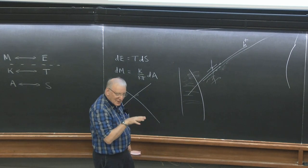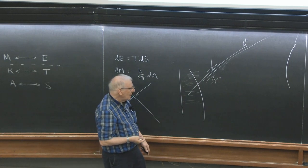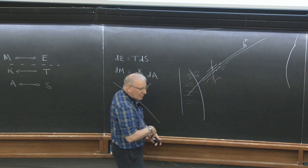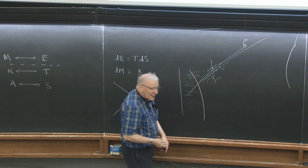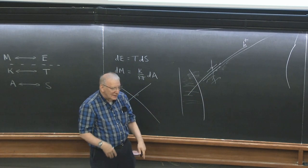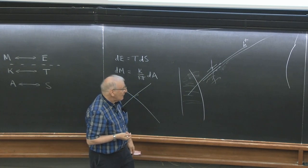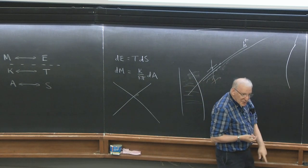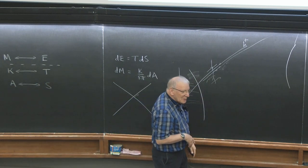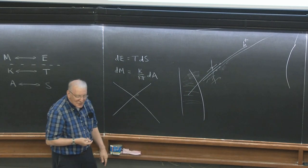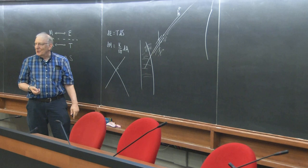Zeldovich and Starobinsky pointed out in their paper on superradiance that you would get particle creation, but it would just be associated with the rotation spinning down. Analogously, with a charged black hole, you'd expect Schwinger pair production eventually discharging the black hole. The Hawking calculation arose because, in Hawking's visit to Moscow, Zeldovich told him about this work, and Hawking was very skeptical — particularly about what white hole boundary conditions to impose.